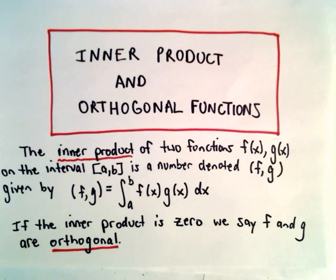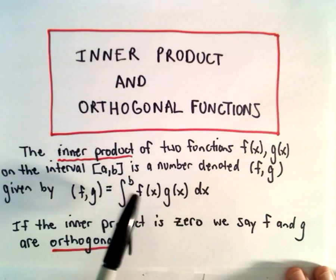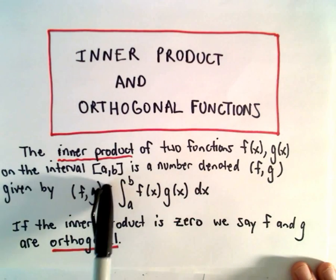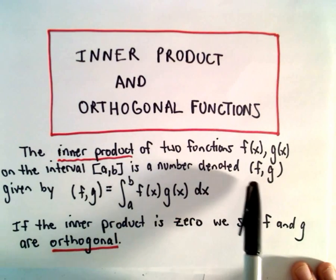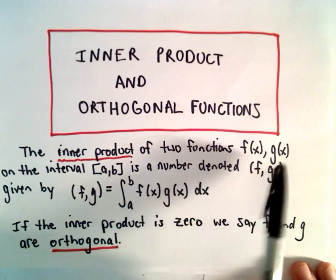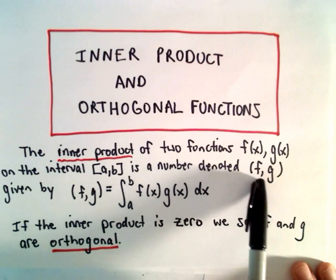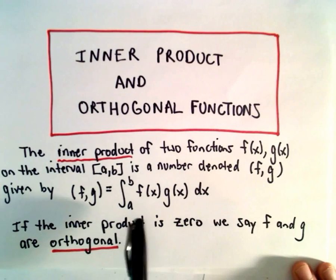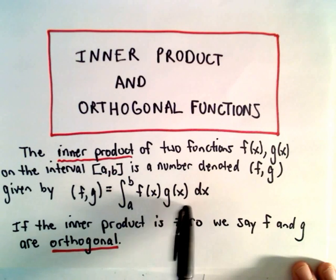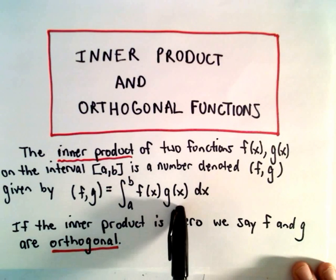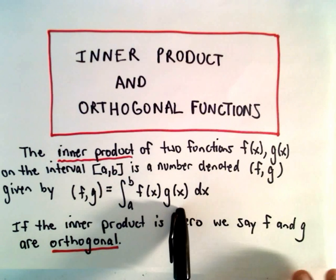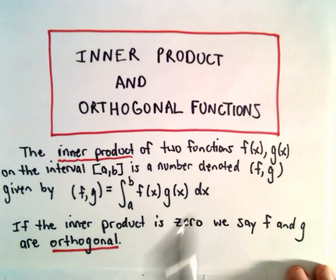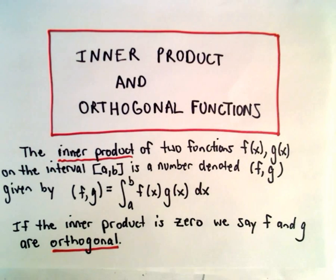The definition of an inner product: we say the inner product of two functions f(x) and g(x) on the interval a to b is a number denoted by (f, g). To find the inner product, all we do is multiply those two functions f(x) times g(x), and then calculate that definite integral from a to b, integrating with respect to x.